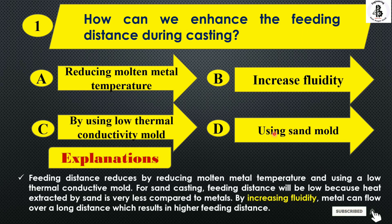In the case of feeding distance, it is reduced by reducing the molten metal temperature and using a low thermal conductivity mold. For sand castings, the feed distance will be low because the heat extracted by the sand is very less as compared to metals.